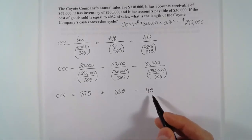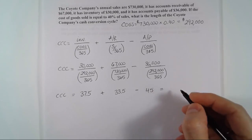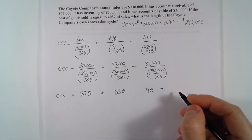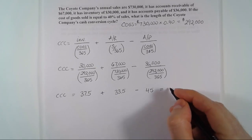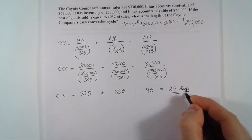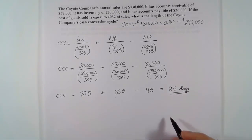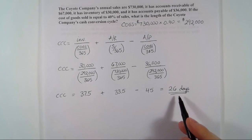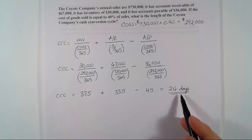Putting all the pieces together: 37.5 + 33.5 − 45 = 26 days. The cash conversion cycle for the Coyote Company is 26 days, meaning it takes 26 days from when cash is invested to when the company gets its cash back.